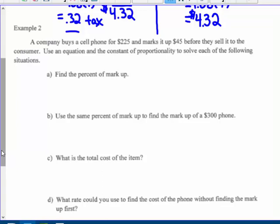Example two says a company buys a cell phone for $225 and marks it up $45. Of course they do—they have to make money before they sell it to me, the consumer. Use an equation and the constant of proportionality to solve each of the following situations. Find the percent of markup. They're marking it up $45 from the original $225, so part over whole equals that percent over 100.